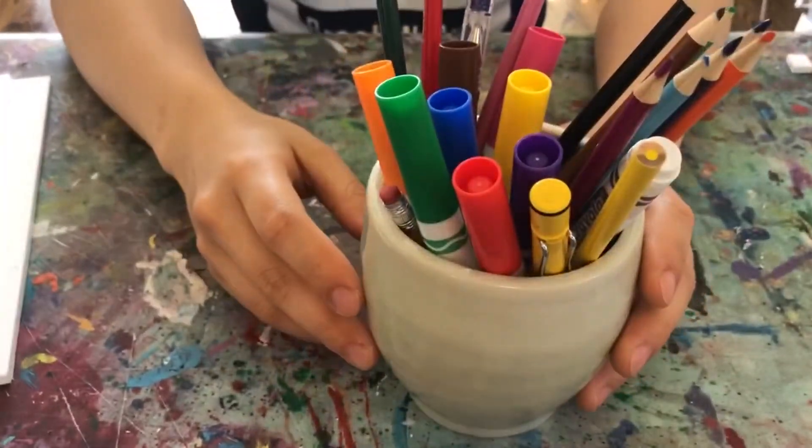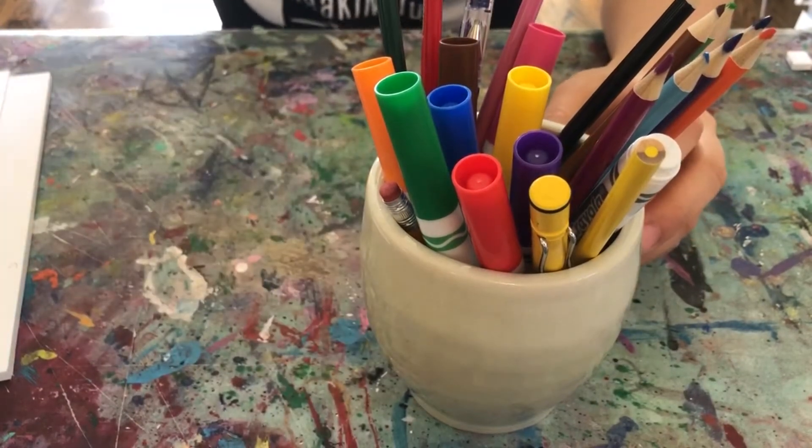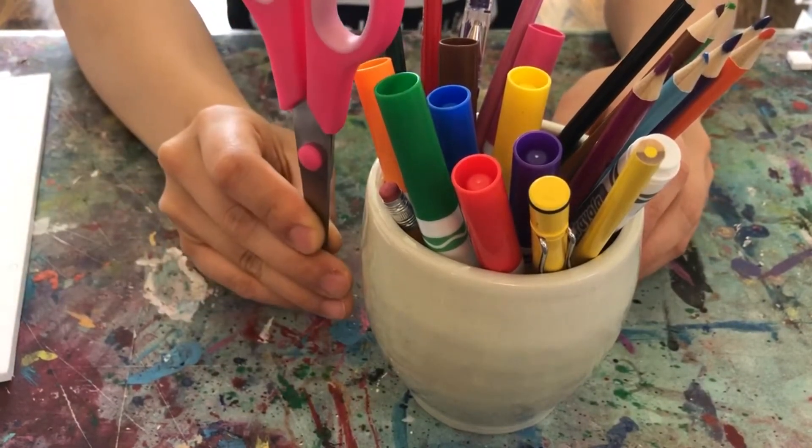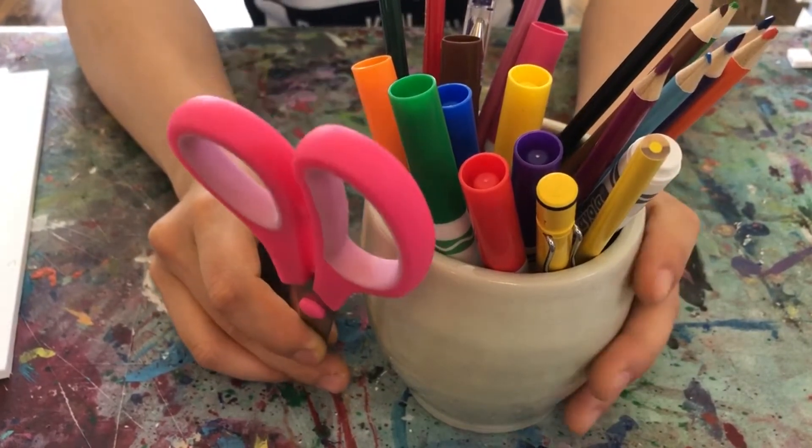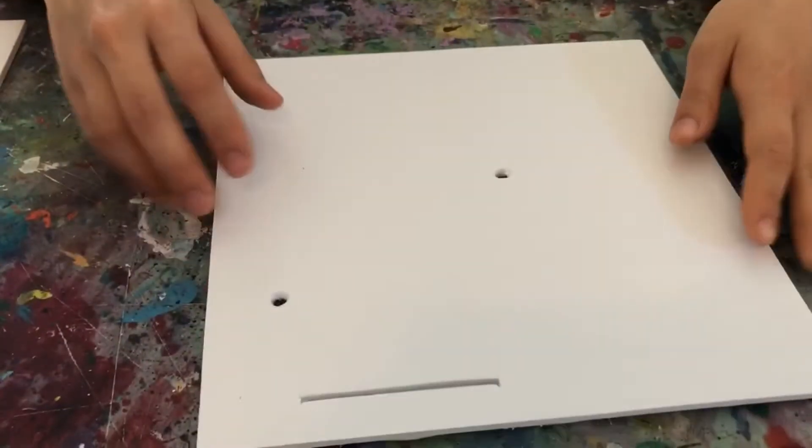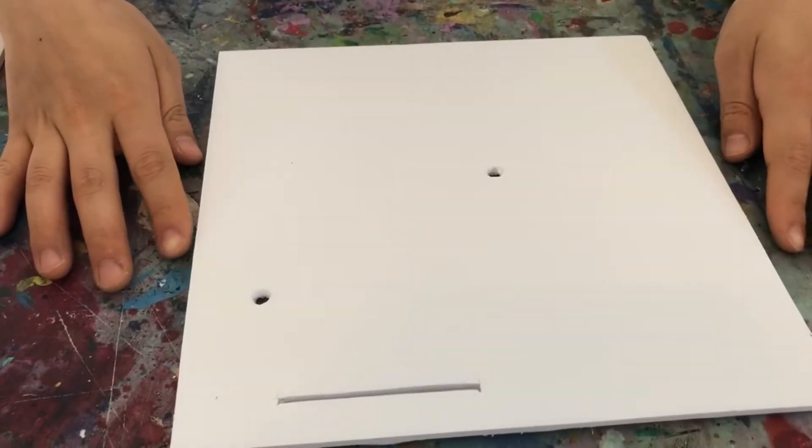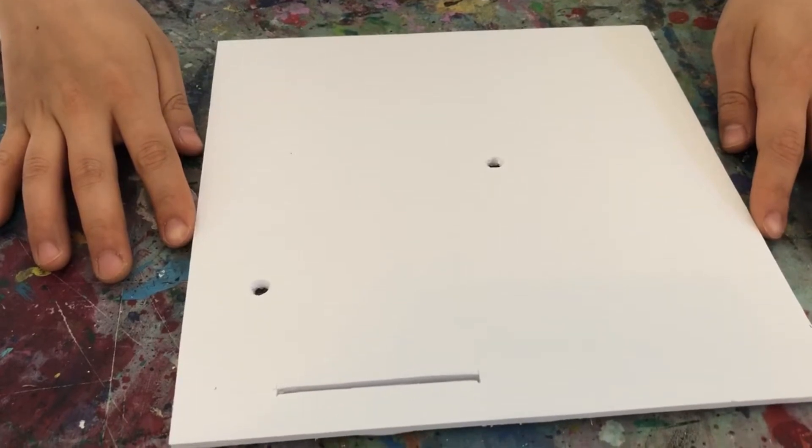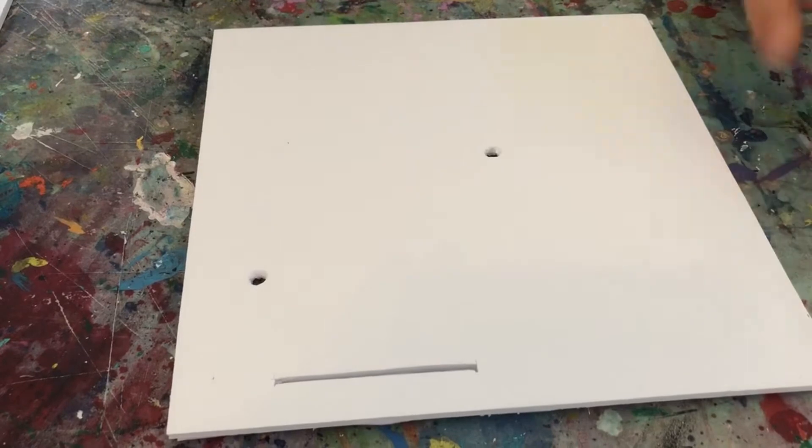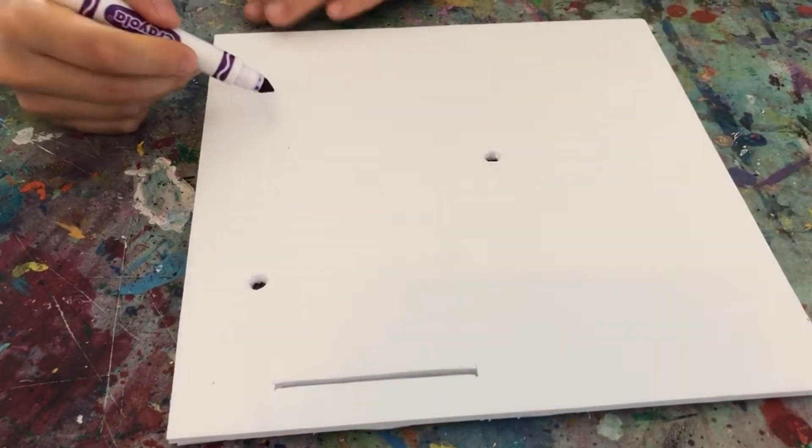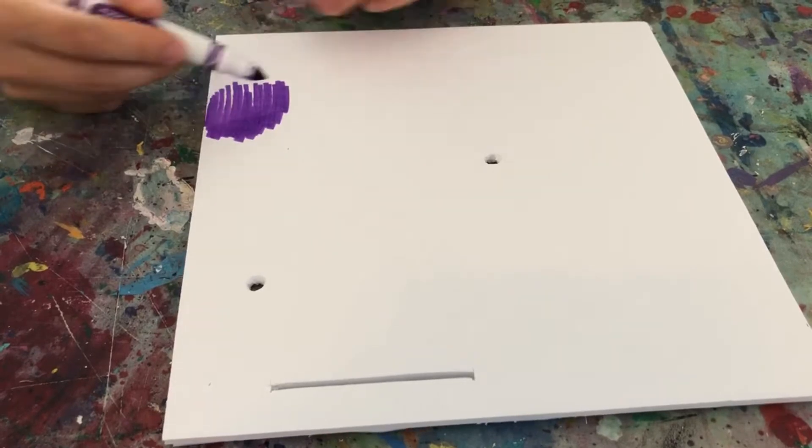All right, now that we have everything, all you'll need are some markers or coloring pencils and a pair of scissors. Let's get started. First, take your foam piece A - the side without the double-sided tape should be facing up and the slit should be on the top right corner. You can color it any color you want.